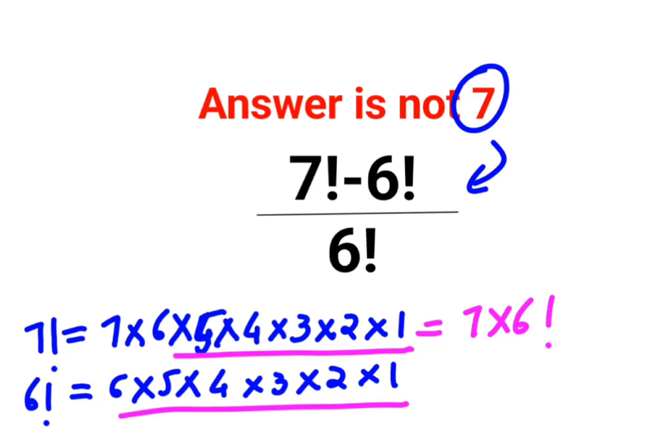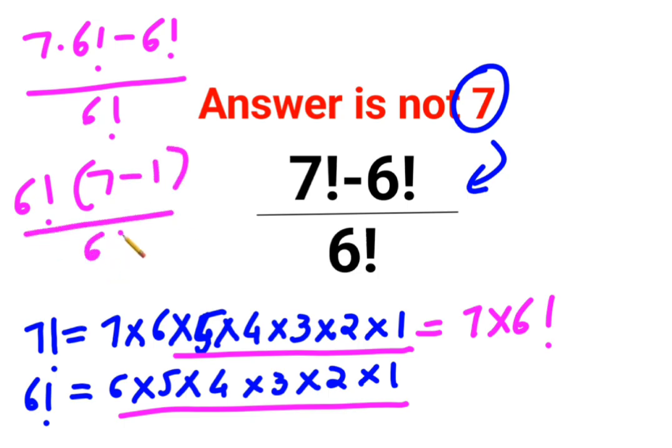Using this, I can write this as 7 into 6 factorial minus 6 factorial upon 6 factorial. So I can take 6 factorial common. So I am left with 7 minus 1 upon 6 factorial.